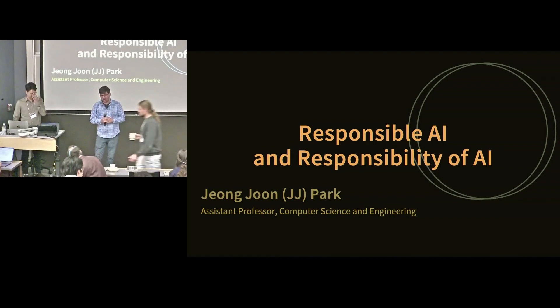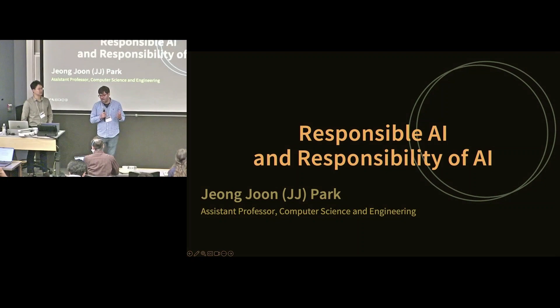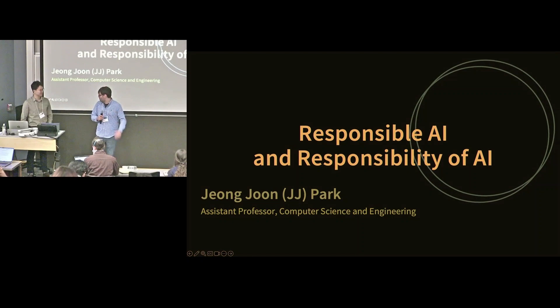For our next session we have two invited talks. Our first invited speaker is JJ Park. JJ is a brand new assistant professor in computer science. He just joined the university about a month ago, and before that he was a postdoc at Stanford, and prior to that got his PhD at University of Washington. JJ broadly works in computer vision and computer graphics, and his work has had a lot of impact, really changing how people represent 3D models and reconstruct them from images.